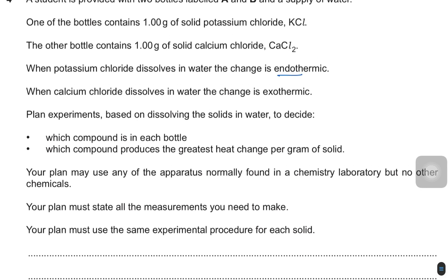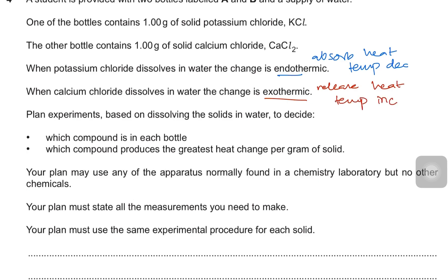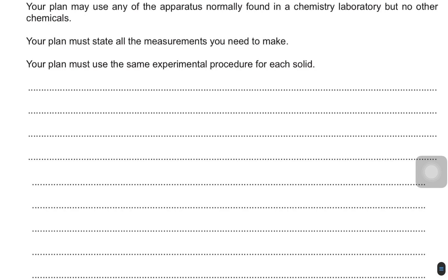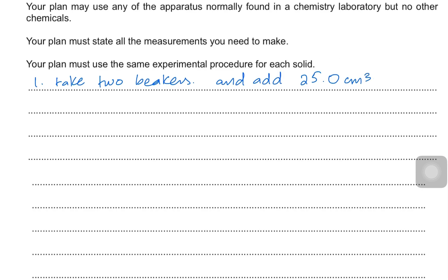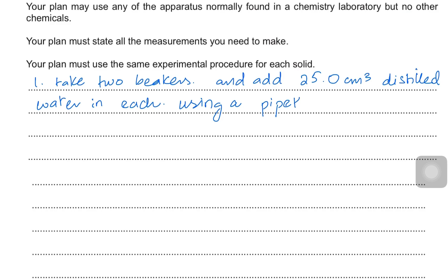This is straightforward because endothermic reactions absorb heat and the temperature decreases, while exothermic reactions release heat and the temperature increases. Make sure you are taking the same amount of water in both scenarios. Take two beakers and add 25.0 cm³ of distilled water in each, measured using a pipette, burette, or measuring cylinder.